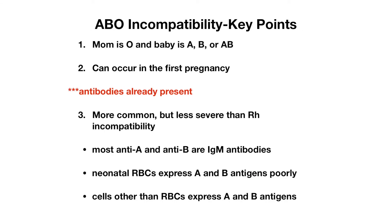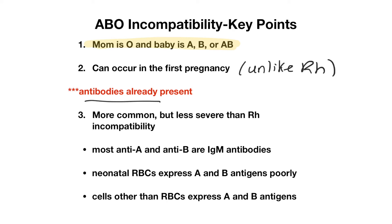With ABO incompatibility, mom is of blood type O because she produces both anti-A and anti-B antibodies in her blood, and baby is of blood type A, B, or AB. This can occur in the first pregnancy, unlike with RH incompatibility, because as mentioned earlier, the antibodies are already present from an early age.